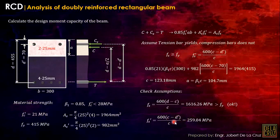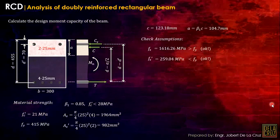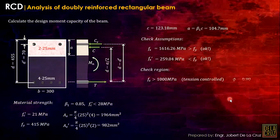With those dimensions confirmed, we proceed. Now check the region — compare the actual stress on the outermost tension steel bar, farthest from the neutral axis. That stress exceeded 1000 MPa, so this section is in tension-controlled region. For tension-controlled, the reduction factor φ = 0.9.